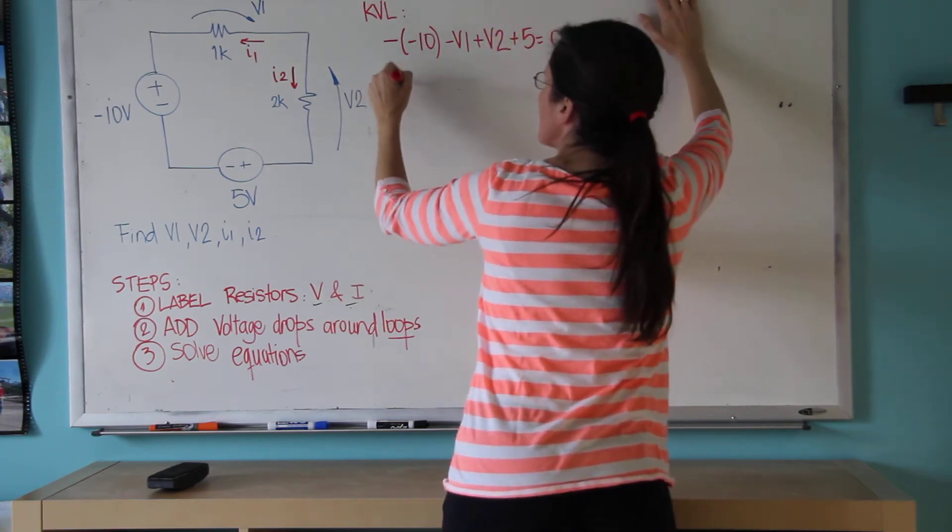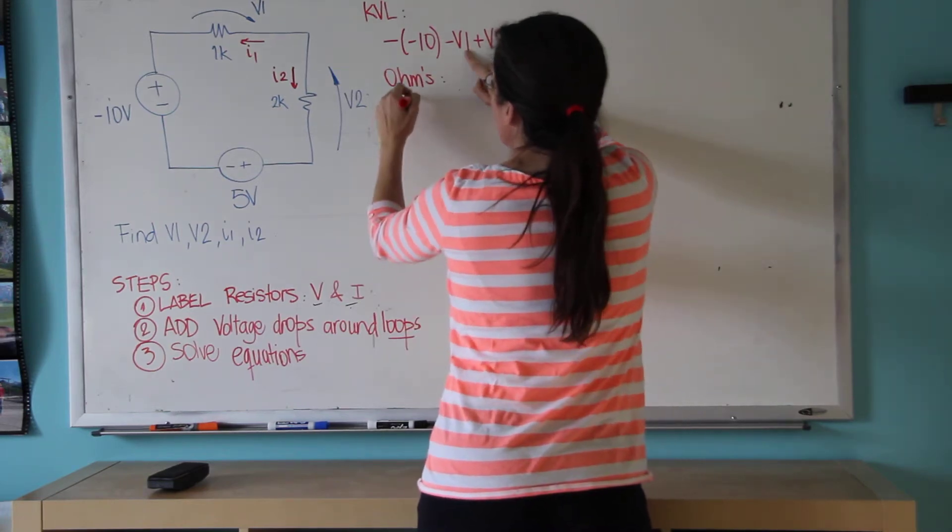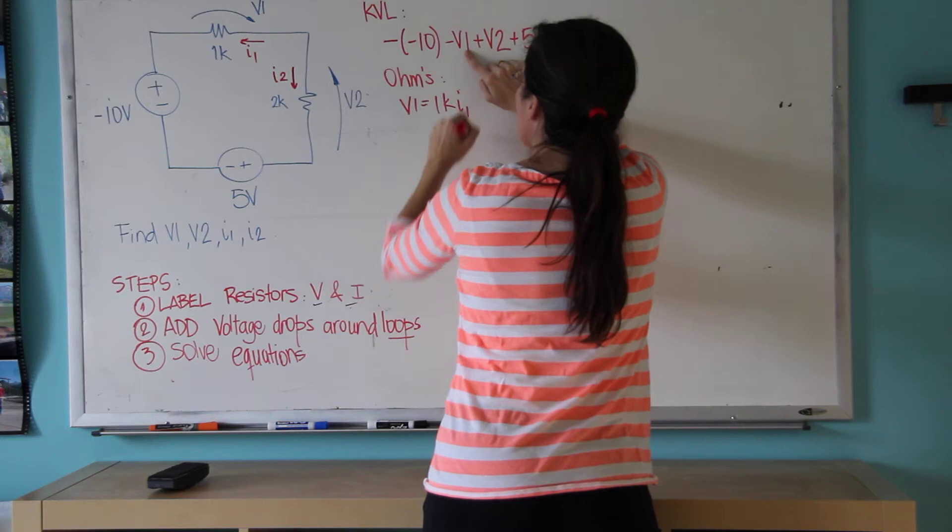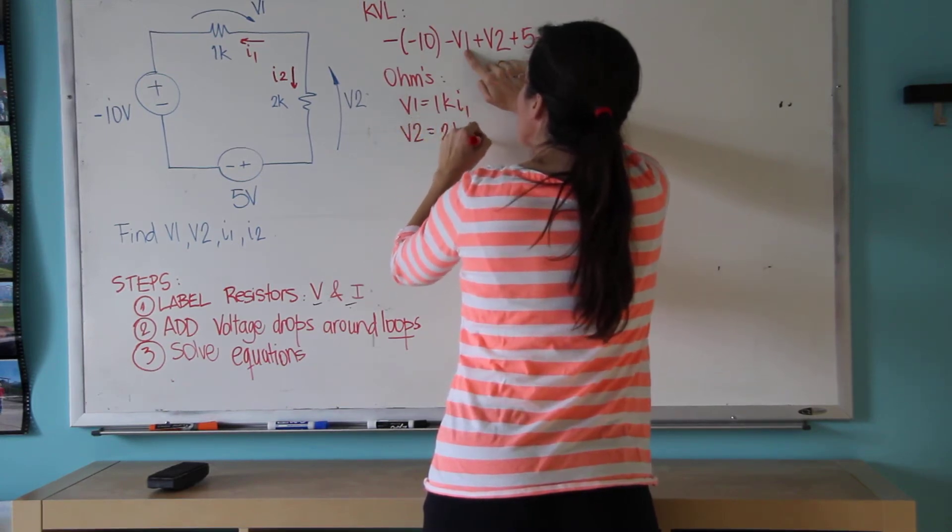And now I'm going to use Ohm's Law. So V1 equals 1K times I1. V2 equals 2K times I2.